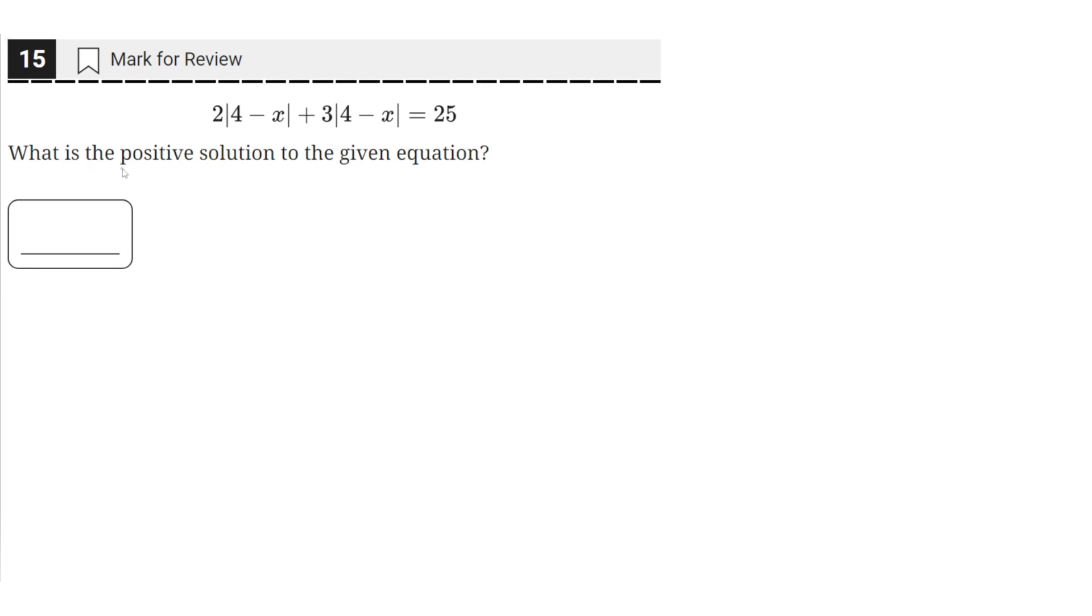What is the positive solution to the given equation? We have this equation here with absolute values, and we need to find a solution that is positive. This is the equation 2 times the absolute value of 4 minus x, plus 3 times the absolute value of 4 minus x, which equals 25.